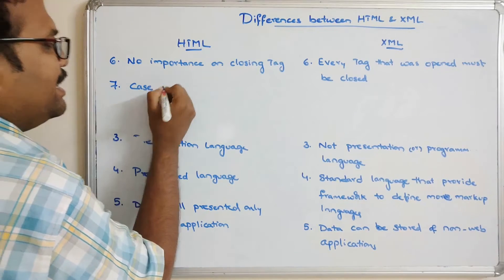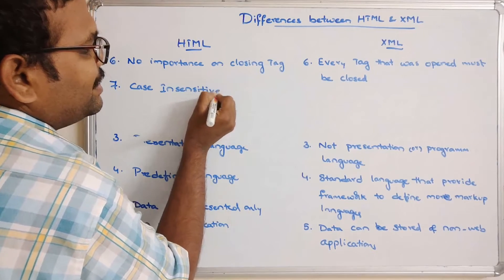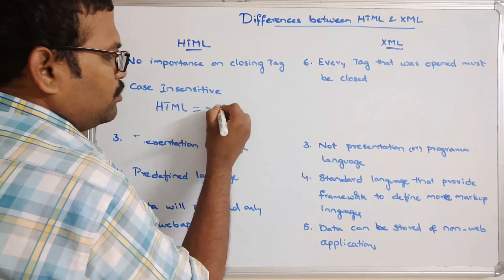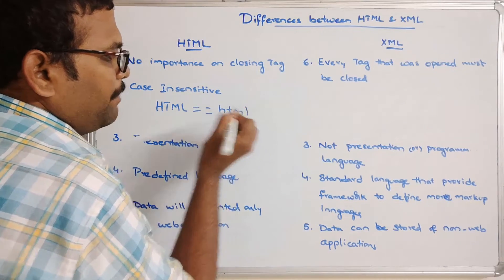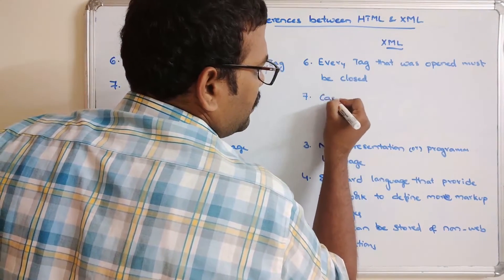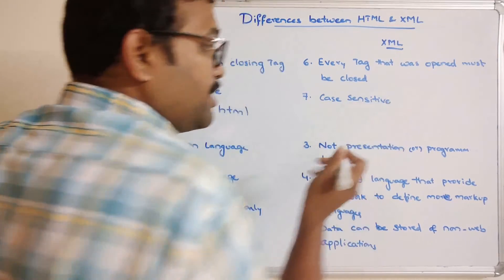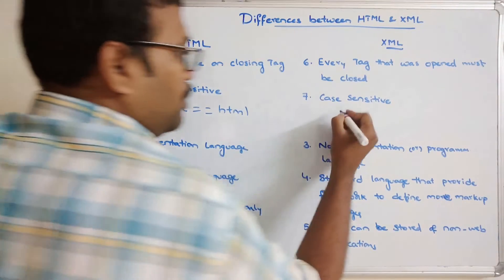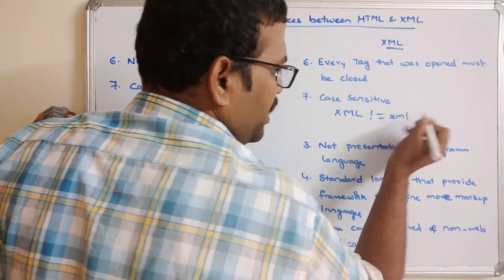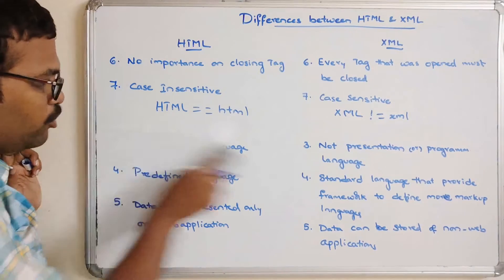HTML is case insensitive — so 'HTML' written in uppercase is equal to 'html' in lowercase. But XML is case sensitive, meaning there is a difference between lowercase and uppercase. So 'xml' and 'XML' are treated as different tags.